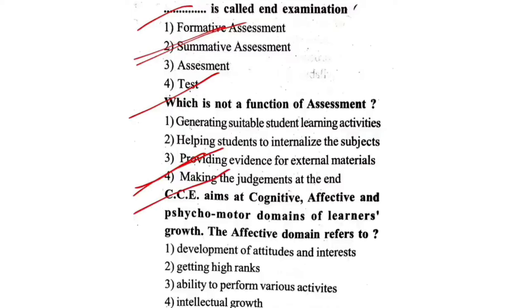CCE aims at cognitive, affective and psychomotor domains of learners' growth. The affective domain refers to: First one, development of attitudes and interests. Second one, getting high ranks. Third one, ability to perform various activities. Fourth one, intellectual growth. The correct answer is first one — development of attitudes and interests.